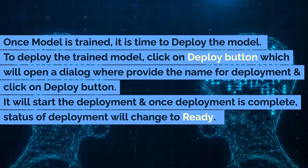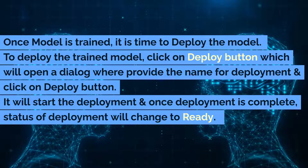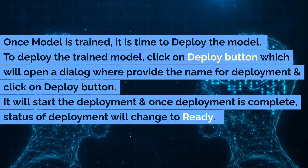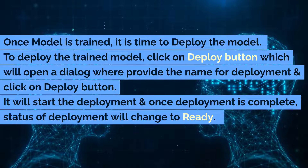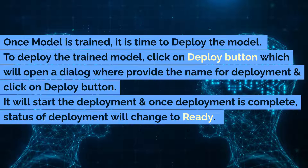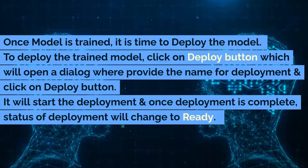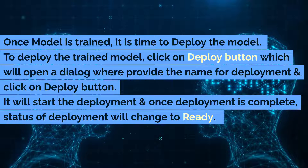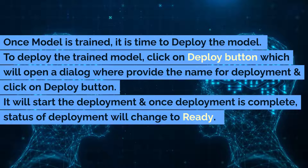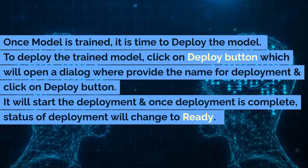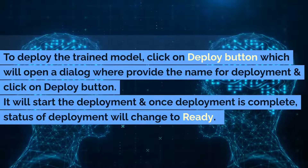Once the model is trained, it is time to deploy it. To deploy the trained model, click the Deploy button, which will open a dialog where you provide the name for deployment and click the Deploy button. It will start the deployment, and once deployment is complete, the status of the deployment will change to Ready.